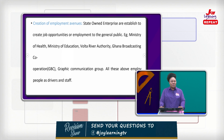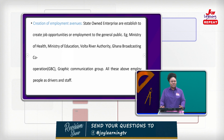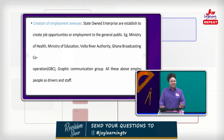For example, the Ministry of Health, where we have doctors, nurses, anesthetics, ophthalmologists, and others. Then the Ministry of Education also employs teachers, facilitators, resource personnel, and others. The Volta River Authority is also a place where creation of job avenues is done. Ghana Broadcasting Corporation — GBC — and Graphic Communication Group all employ people as drivers and staff.